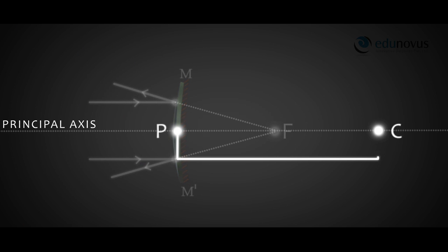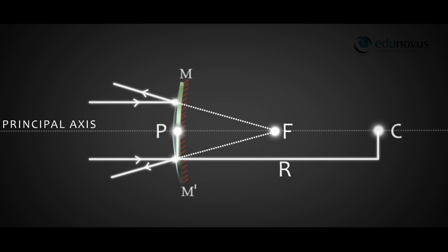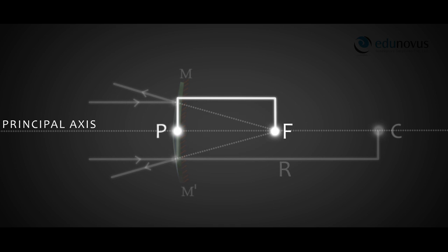The distance between the pole P and the center of curvature C is called the radius of curvature, denoted by R. The distance between the pole P and the principal focus F is called the focal length of the mirror, denoted by f.